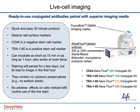This slide lists the merits of the live cell imaging kit. The Alexa fluor-labeled antibodies are sterile filtered, bioburden, mycoplasma, and endotoxin tested, and they come in three wavelengths to accommodate the most commonly used microscopes. The kit has a quick and easy 30-minute protocol. It detects cell surface markers with CD44 as a negative stem cell marker and TRA160 as a positive stem cell marker. Incubation time for primary antibody is as short as 15 minutes or as long as one hour, and incubation can also be carried out at room temperature. Staining of the cells will persist for a few days, but it is best to image the cells in the first hour after staining.